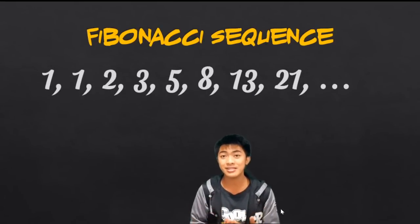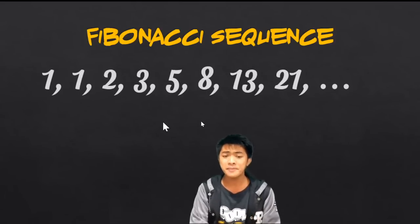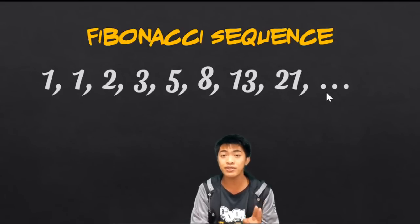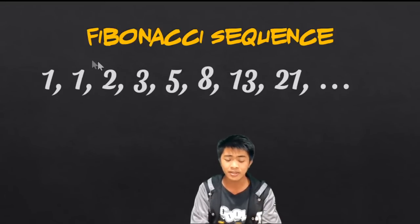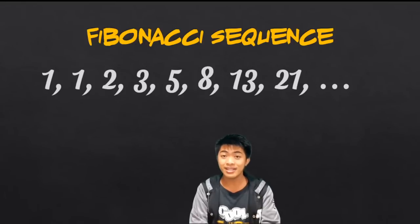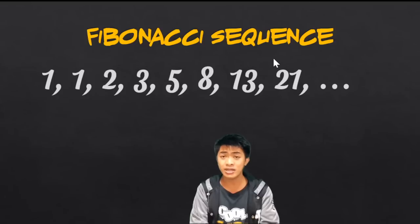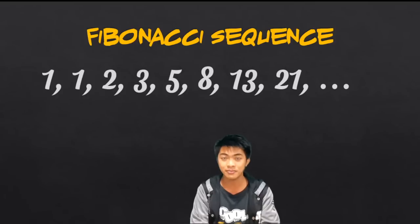In the last part, we introduced the Fibonacci sequence. A Fibonacci sequence is a sequence where to get the next term, you add the two previous terms. For example: 1 plus 1 is 2, 2 plus 1 is 3, 3 plus 2 is 5, and so on. The Fibonacci sequence is very much related to the golden ratio. If you take two consecutive terms of a Fibonacci sequence — say 21 and 13 — and get their ratio, it will be very close to the golden ratio, which is approximately 1.62.